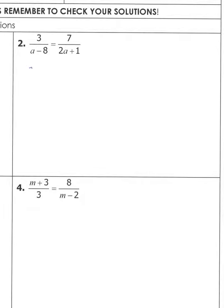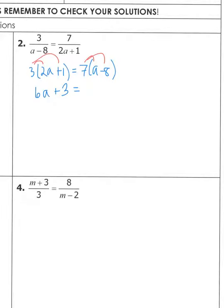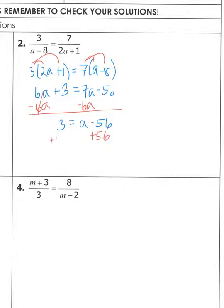Using cross products, I get three times the quantity two a plus one equals seven times the quantity a minus eight. Distributing: I get 6a — don't forget to distribute the three to the one, giving plus three — equals 7a minus 56. Focusing on variables: 6a is smaller, so subtract 6a from both sides. I get 3 equals a minus 56. Add 56, and I get a equals 59.